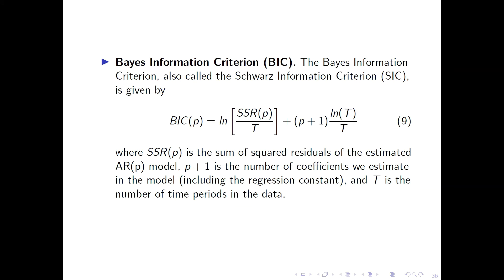To alleviate some of this problem, you can use the Bayes Information Criterion, also called the Schwartz Information Criterion. This is essentially just a number computed for the model with p number of lags. For example, if you have an AR(2) model, then p would be 2, and you get the sum of squared residuals from that model in the ordinary regression output. The capital T is the number of time periods in your data.